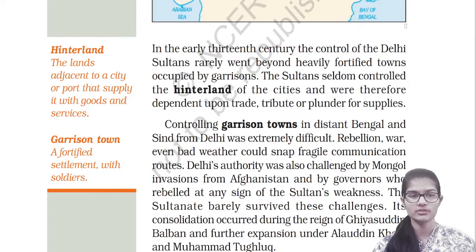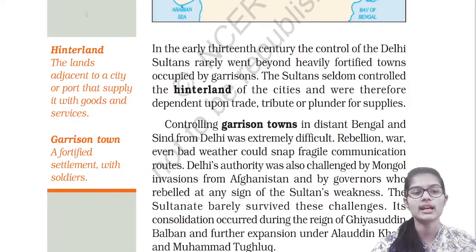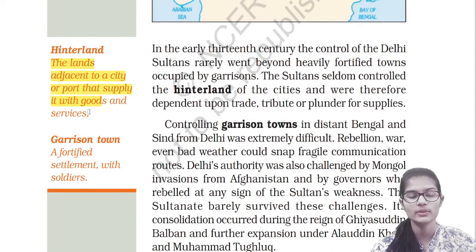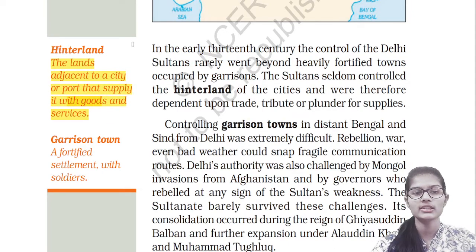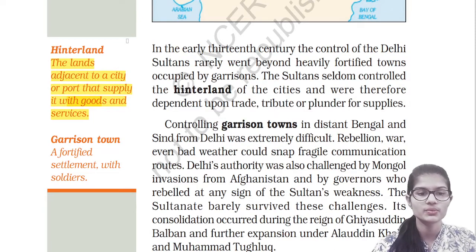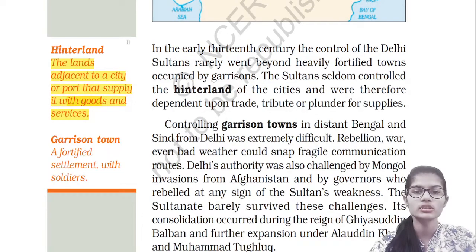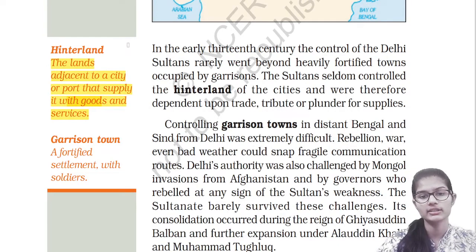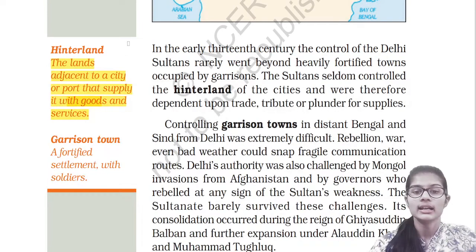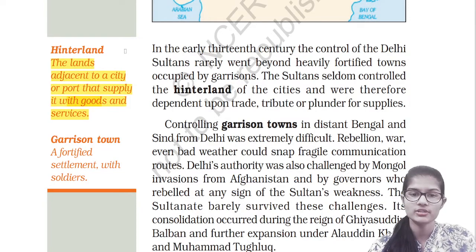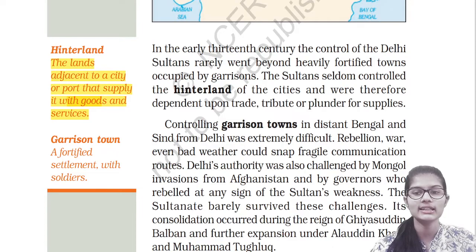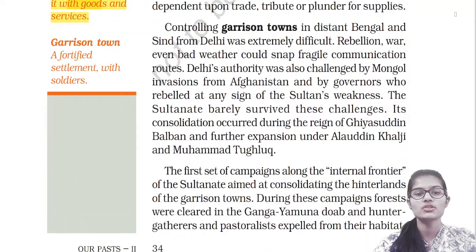The Sultanate was completely dependent upon trade, tribute, and plunder for supplies. Hinterland means the lands on the edge of the city or port that supply it with goods and services. So the Sultanate controlled the cities but was entirely dependent on trade and tribute for its resources.